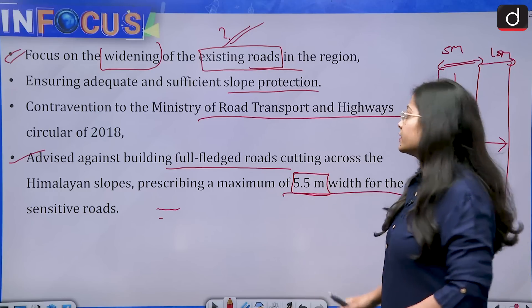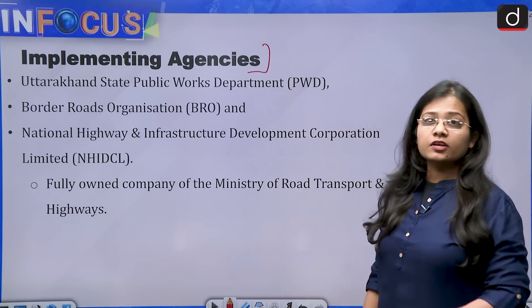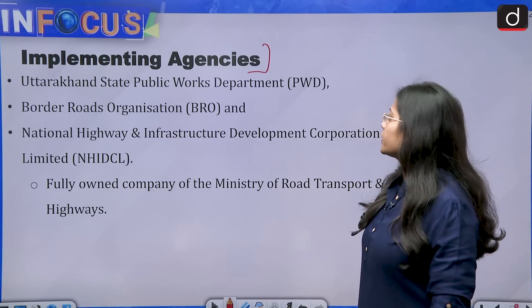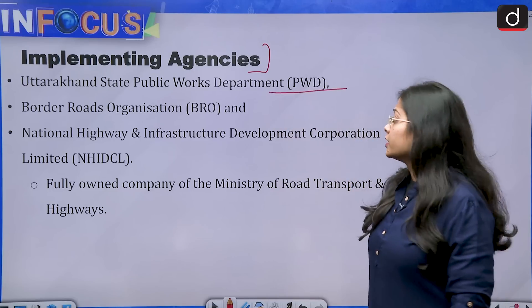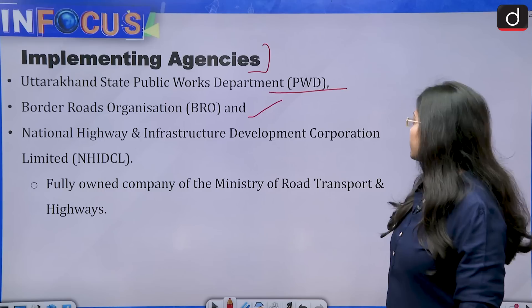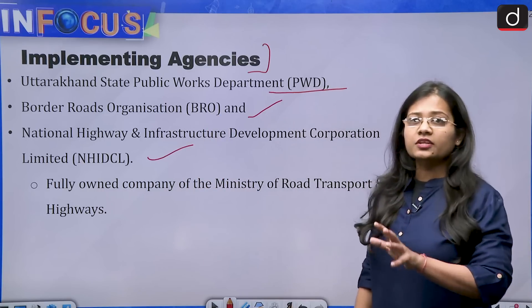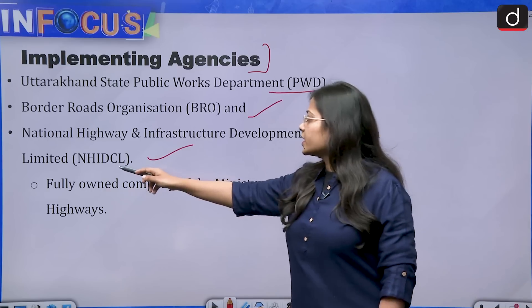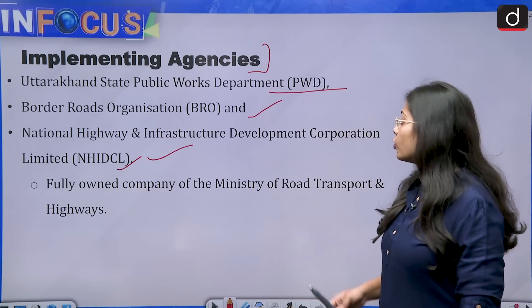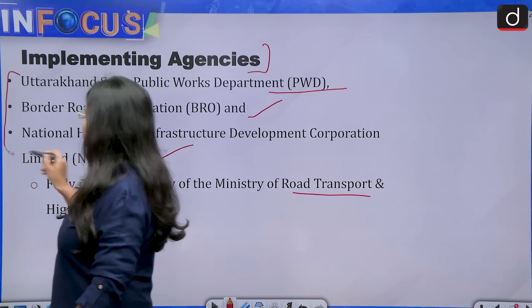The implementing agencies associated with the Char Dham Project are: the Uttarakhand State Public Works Department (PWD), the Border Roads Organization (BRO), and the National Highways and Infrastructure Development Corporation Limited (NHIDCL). NHIDCL is a fully owned company of the Ministry of Road Transport and Highways.